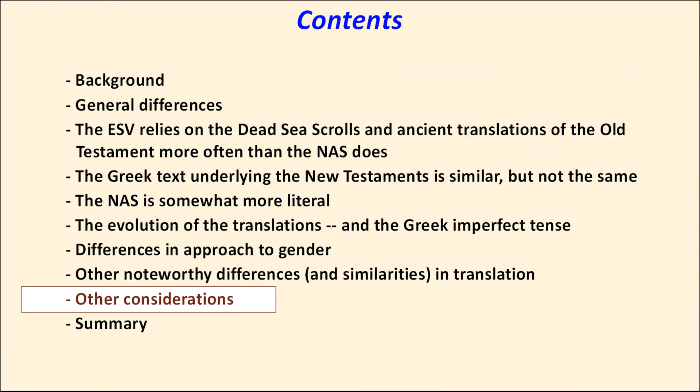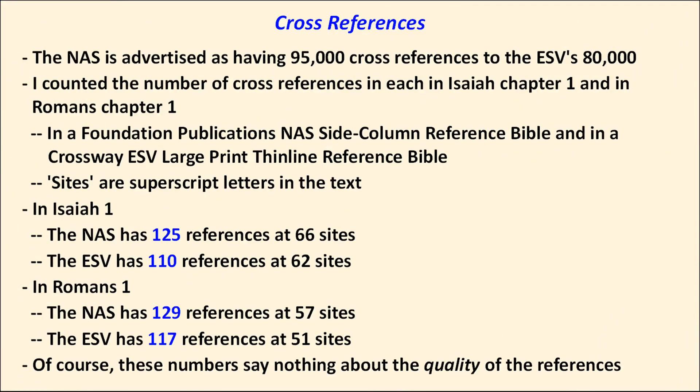There are other things a person should consider when choosing a translation. The cross-reference set may be important to you. The NAS advertises 95,000 cross-references, while the ESV says it provides 80,000. I did a spot check in Isaiah chapter 1 and Romans chapter 1 — my results are shown on this chart. The totals seem not to disagree with the advertised numbers, and certainly the NAS has more references than the ESV in these two chapters.